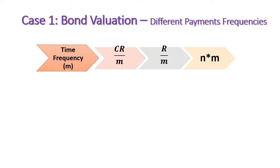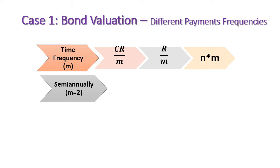For example, the first time frequency is semi-annual coupon payments. If this bond provides semi-annual coupon payments, the bondholders will receive coupon payments twice per year — every six months. So the number of time intervals per year for semi-annual coupon payments is two, meaning m equals two.